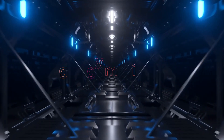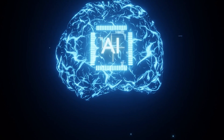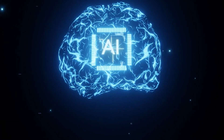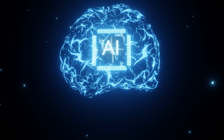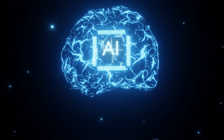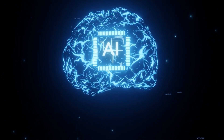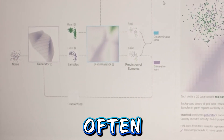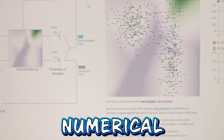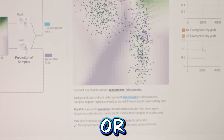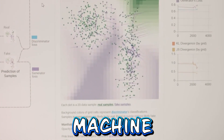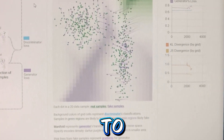Representation: After processing the input data, the AI system represents it in a structured format suitable for further processing. This representation often involves converting the data into numerical vectors or tensors, which are easier for machine learning models to manipulate.